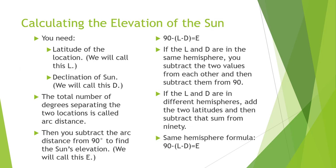Now, calculating the elevation of the sun — this is where the analima comes in. You need to know the latitude of the location, which we'll call L, and the declination of the sun, which we'll call D. The total number of degrees separating the two locations is called the arc distance. You subtract the arc distance from 90 degrees to find the sun's elevation, which we call E. So the formula is: 90 minus (L minus D) equals E.